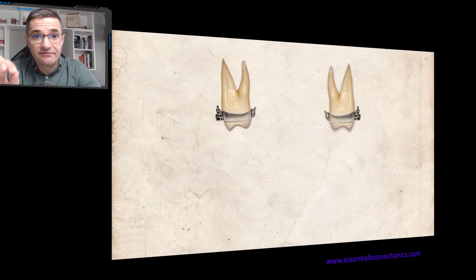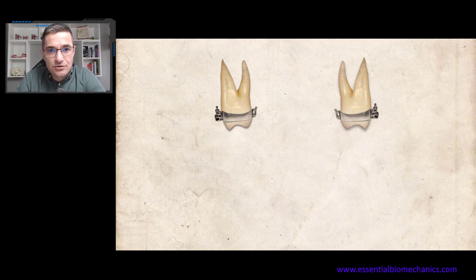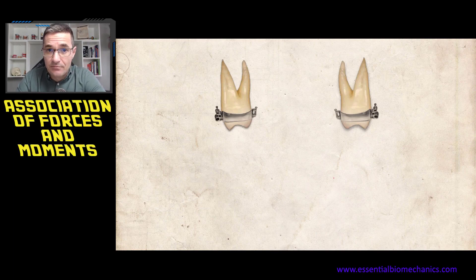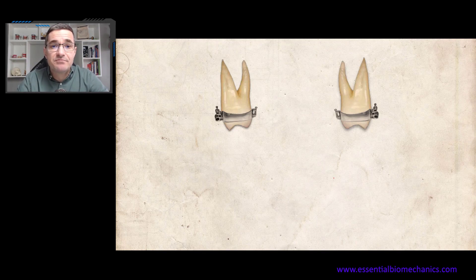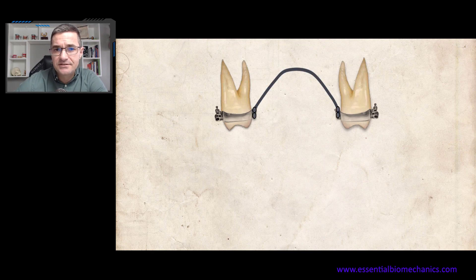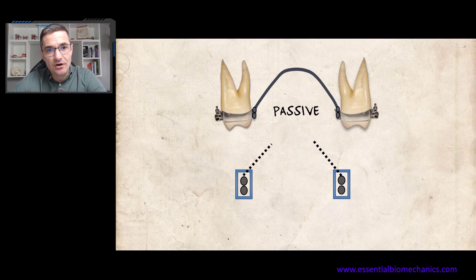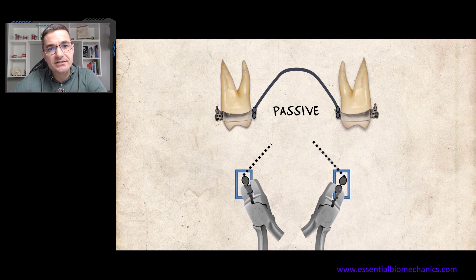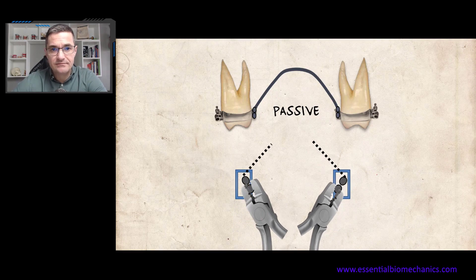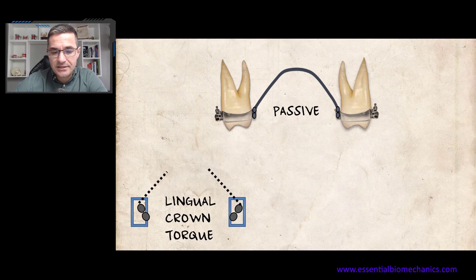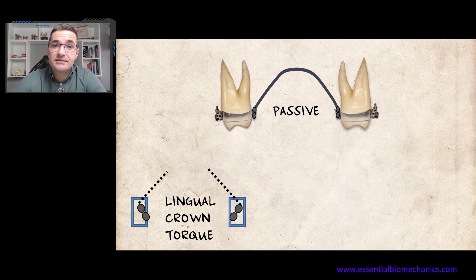If you are in doubt why I am generating expansive or constrictive forces in these two situations, I will explain now. The phenomenon that explains this situation is called the association between forces and moments. This phenomenon occurs with several appliances depending on the plane of space and the pre-activation. Let's start with a passive transpalatal bar. This is a better look at the terminal ends. We will apply, for example, two lingual crown torques. Here you can see the lingual crown torques applied on both sides — you can apply it only on one side, as in our question, but for a better demonstration, I will show what happens when applied on both sides.